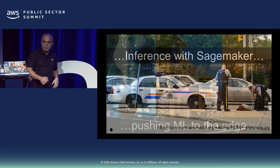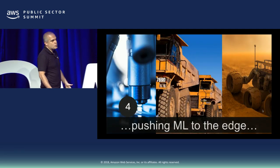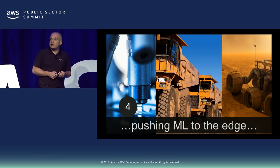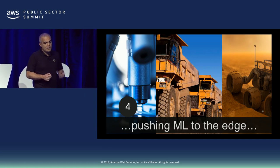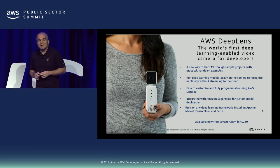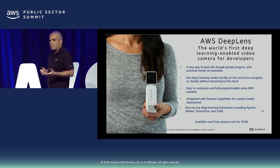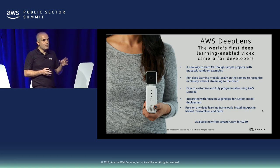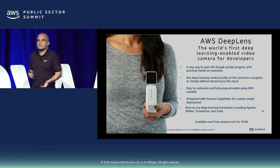Many customers have told us: 'Sometimes I don't have internet, sometimes I need to work offline without a cloud connection. Can I do it?' Yes — there are several ways. One example uses a device called DeepLens. DeepLens is our camera — not a regular camera, but one that can embed all machine learning functions, meaning you can have your model deployed in offline mode without internet.